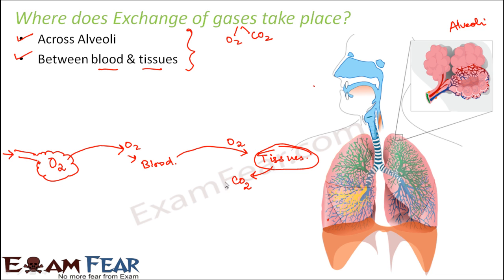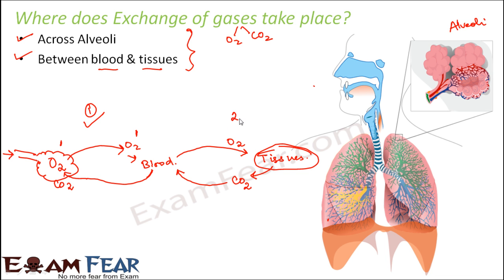The cells want to get rid of this carbon dioxide, so they give it to the blood. The blood vessels again carry the carbon dioxide and supply it back to the alveoli. So exchange of gases takes place between alveoli and the blood vessels — that is one exchange. Again exchange takes place between the blood vessels and the tissues. So these are the two sites where exchange of gases occur.